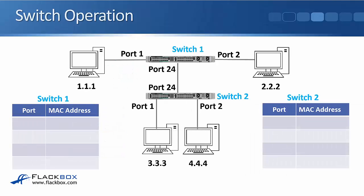So that was how traffic works with a single switch. Now we're going to look at another example where we've got two switches. Switch 1 has got host 1.1.1 plugged into port 1 and 2.2.2 plugged into port 2. Switch 2 has got host 3.3.3 plugged into port 1 and 4.4.4 plugged into port 2. The two switches are connected to each other using port 24 on both switches. Again, we've just powered everything on, so there's nothing in the MAC address table on either switch yet.